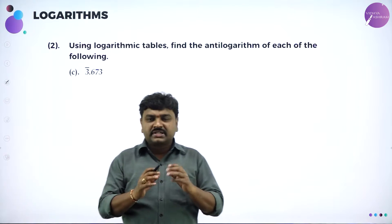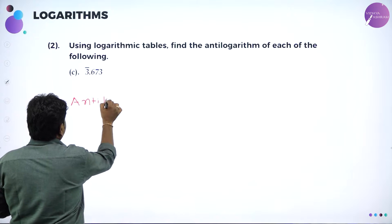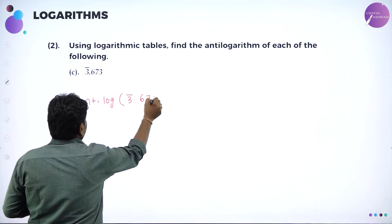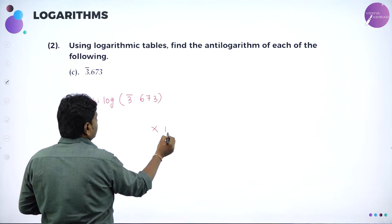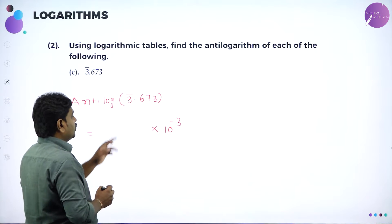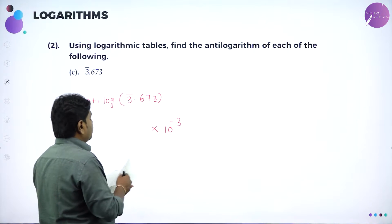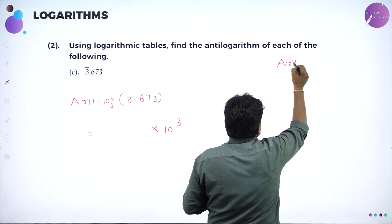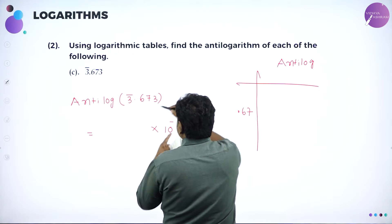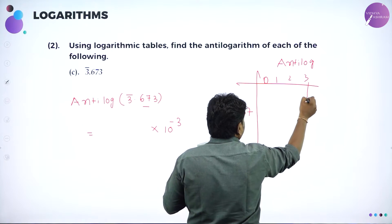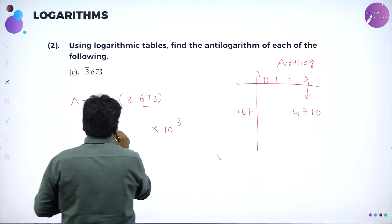Problem c: find anti-log of bar 3 followed by 0.673. Bar 3 means minus 3, so we write 10 power minus 3 for the characteristic. Now look up 0.67 under column 3 in the anti-log table. Under heading anti-log, find 0.67, then column 3. Reading 0.67 under 3 gives 4710.